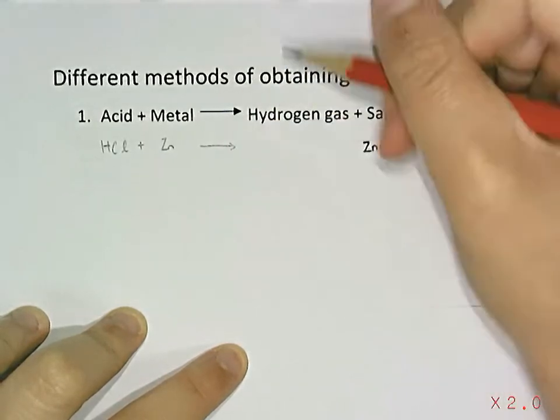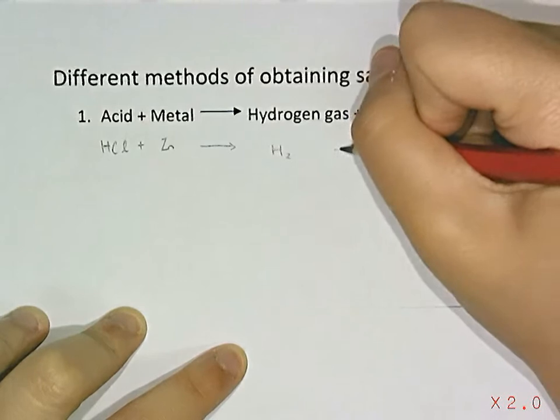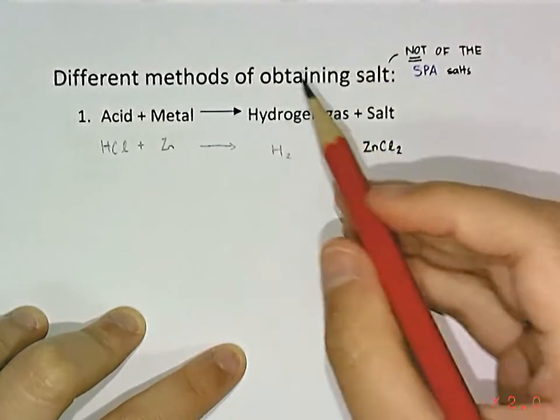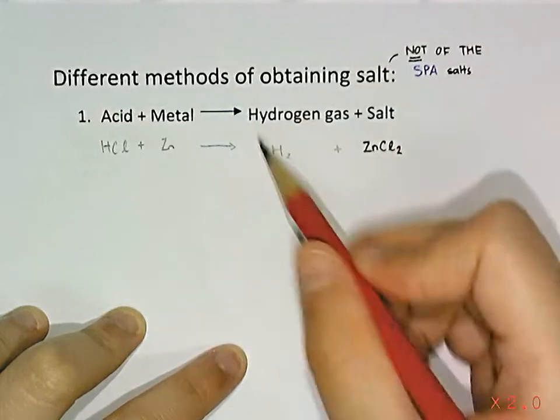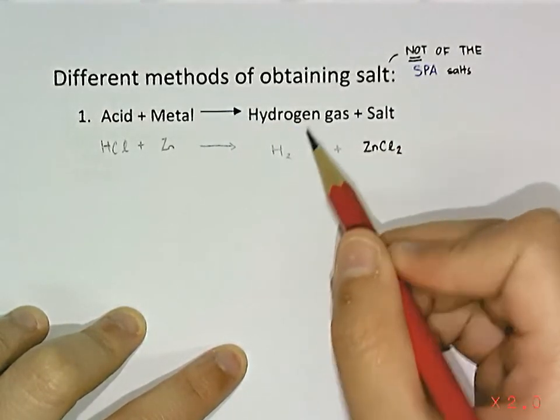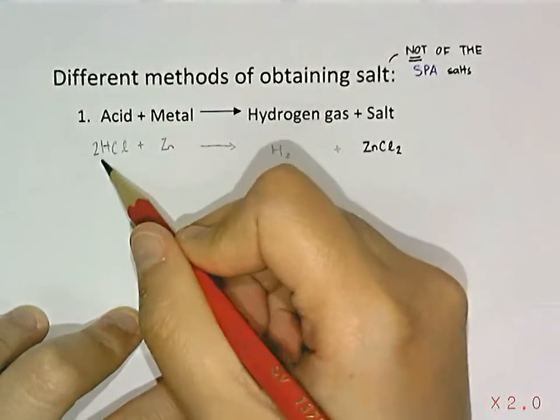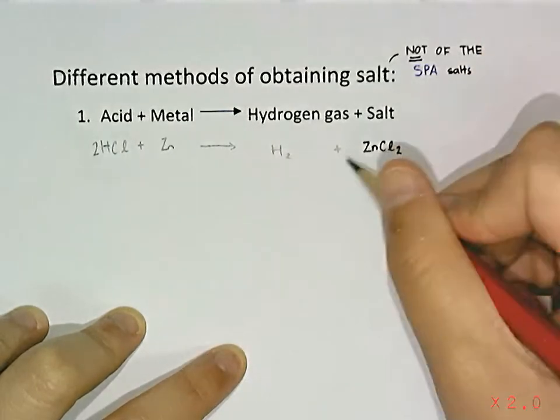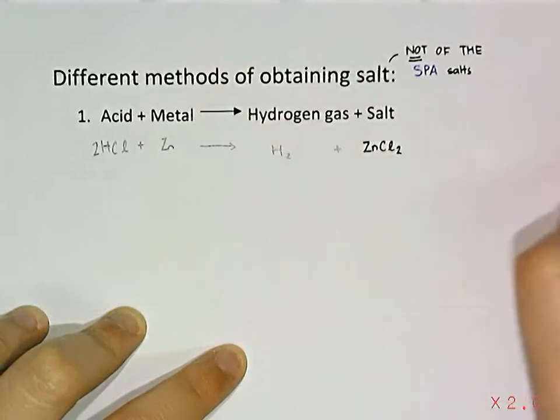We will draw the arrow and put H2 since it is a gas. Now what we have to do is balance the equation. Over here there are two atoms of H, but there is only one here, so we have to add two in front. Now there are two chlorine atoms here as well, so now we have a balanced equation.